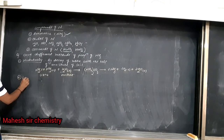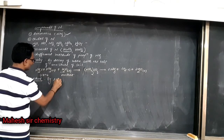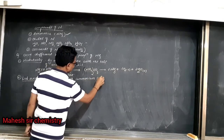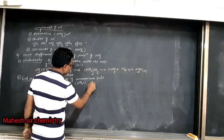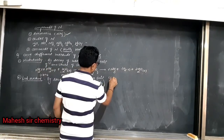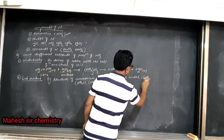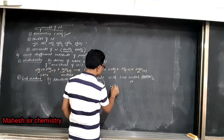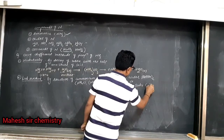The second method is the laboratory method. In the laboratory, ammonia is obtained by the reaction of an ammonium salt — either ammonium chloride (NH₄Cl) or ammonium sulfate ((NH₄)₂SO₄) — with either lime water (Ca(OH)₂) or sodium hydroxide (NaOH), also called caustic soda.